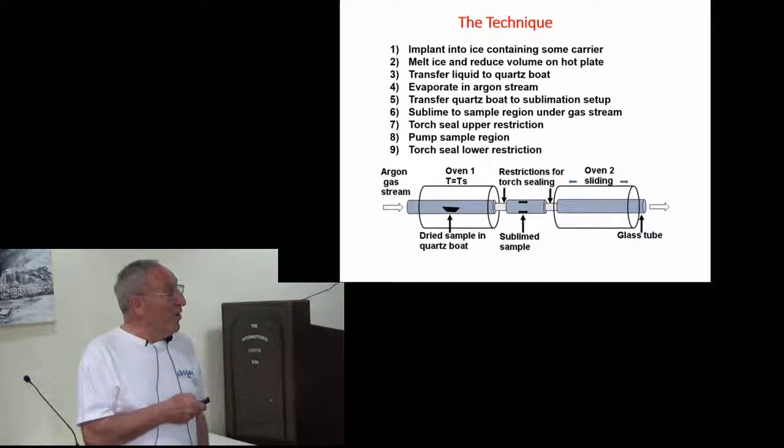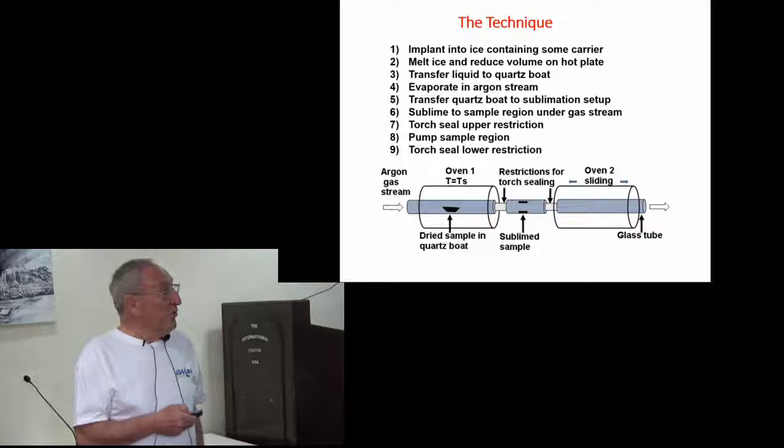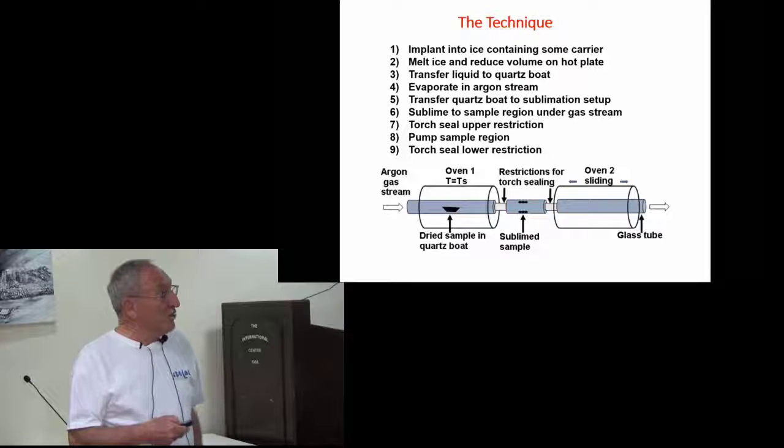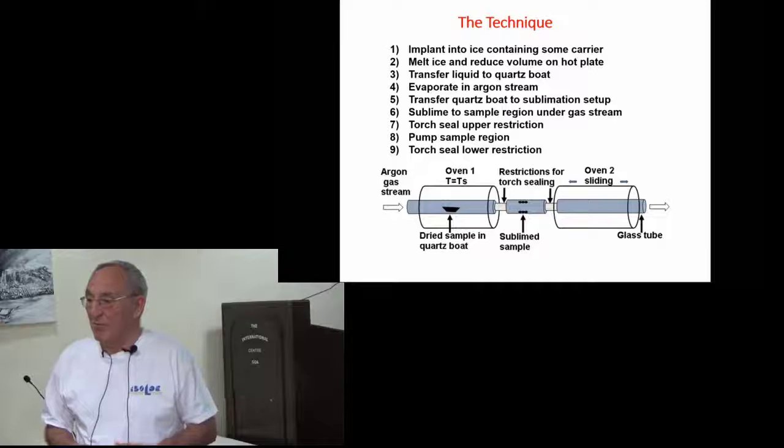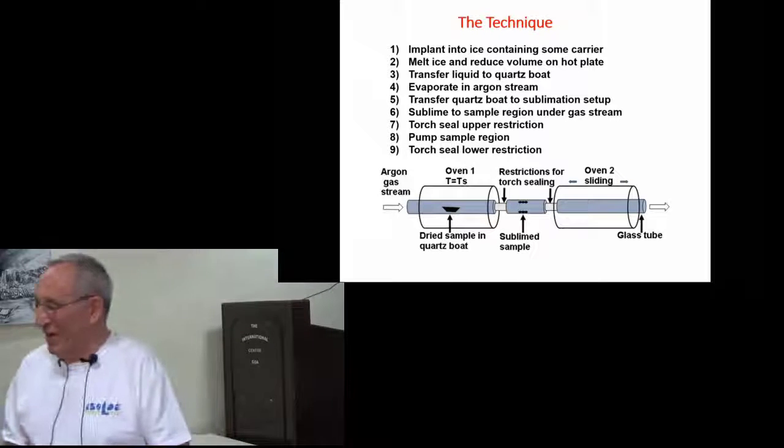This is the technique, very simple. You take the radioactive isotope, implant it into water, melt the water with some carrier, dry it. After drying, put it in the gas stream, sublime the molecules to a container, seal it off here - a glass or quartz container - seal it off with a torch, pump it again, seal it off again, and you have your sample. Nothing more simple than that.